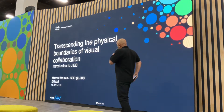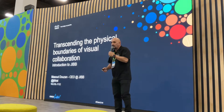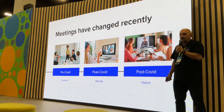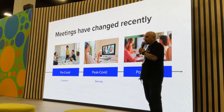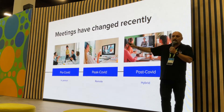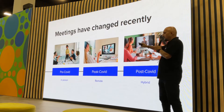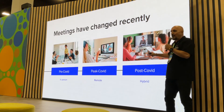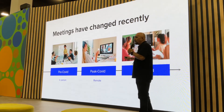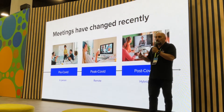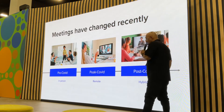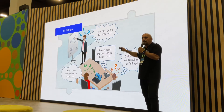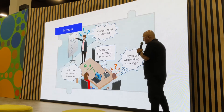As I mentioned, Jib is about transcending the physical boundaries of visual collaboration. These images are quite familiar to all of us. Before the pandemic, all our meetings were happening inside the meeting room, so we had access to everything we wanted. During COVID, we all went remote. The future is hybrid, and we have to be ready to work like this forever. When in-person, everything is immediately available to everyone in the room.